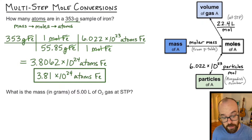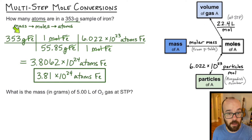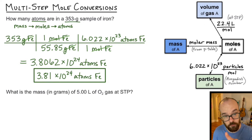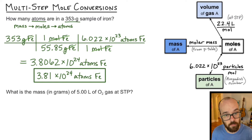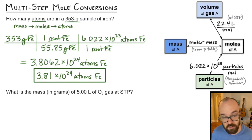The fewest number of sig figs used in the problem was 3, so I keep 3 sig figs and round to 3.81 times 10 to the 24th atoms of iron. For this problem, I used a stoichiometry map to plan my path from mass to particles, wrote out a three-part conversion table, set up conversions so units divide out, and then calculated the answer.